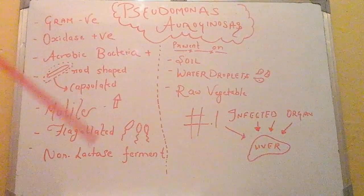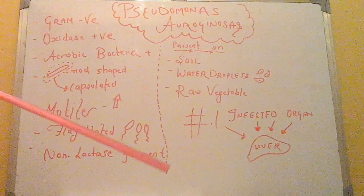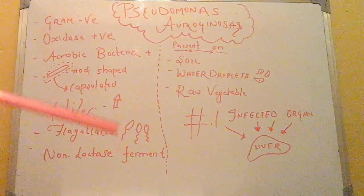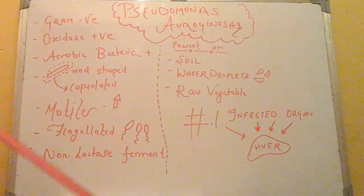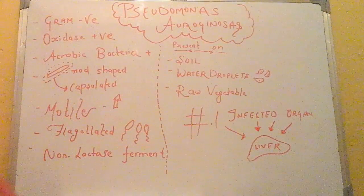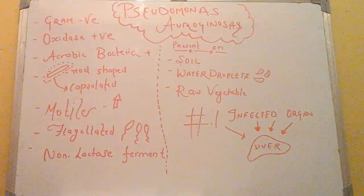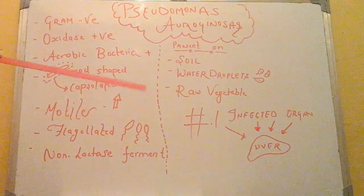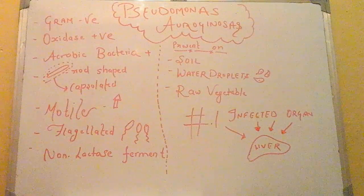Skin and tissue infections include hemorrhage, necrosis, cellulitis, vasculitis, and dermatitis. The pneumonia associated with it is bronchopneumonia. In cystic fibrosis patients, Pseudomonas aeruginosa is most commonly recognized. It is also associated with purple-black lesions, known as ecthyma gangrenosum.